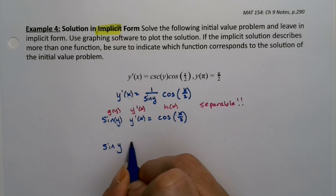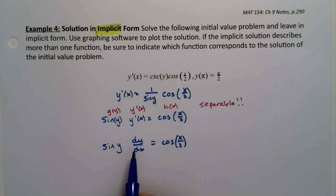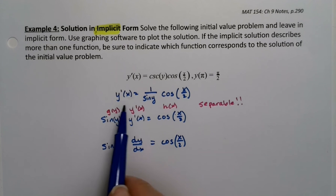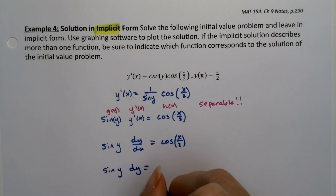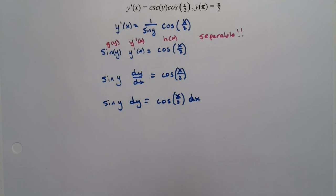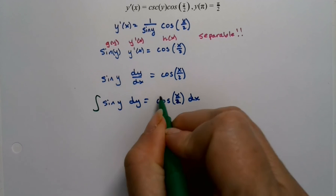So this is sine of y dy/dx is equal to the cosine of x over 2. And yes, if you're thinking I could have done the dy/dx... sure, you could have done that right there. You could do it right at the beginning. Okay, so sine of y dy is equal to the cosine of x over 2 dx. And now I'm going to integrate both sides. Integrate, integrate.